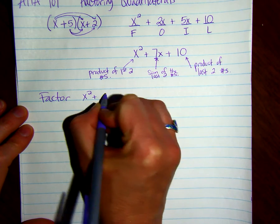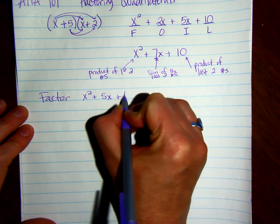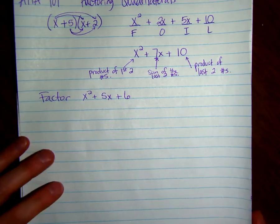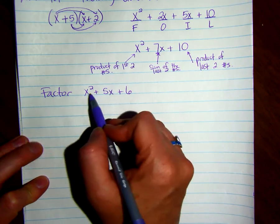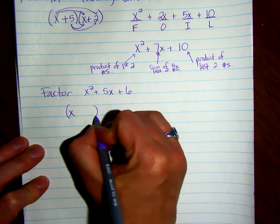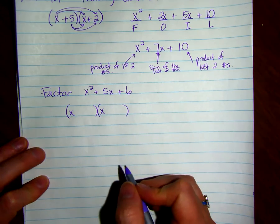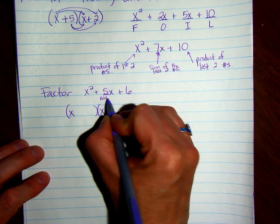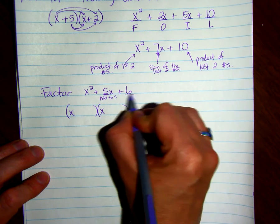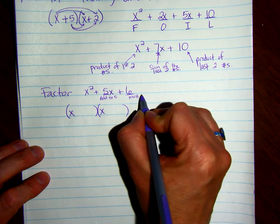Factor x squared plus 5x plus 6. So we know that the first one is the product of the first two numbers, so we know we have to have an x at the beginning. Then we want to find two numbers that add to 5 and multiply to 6.